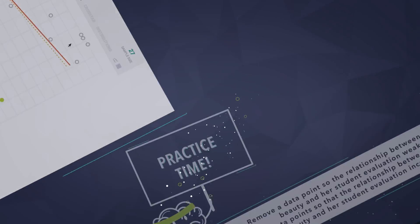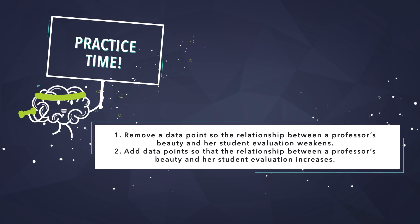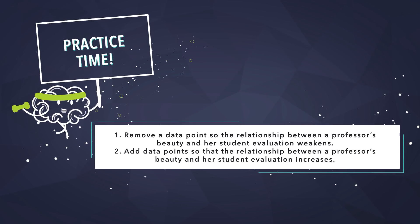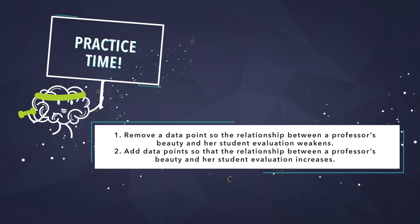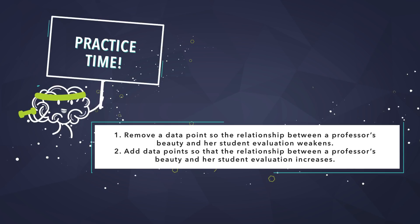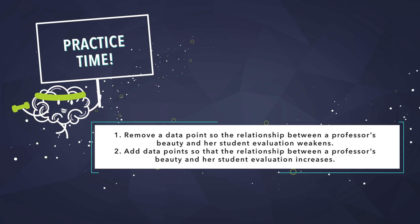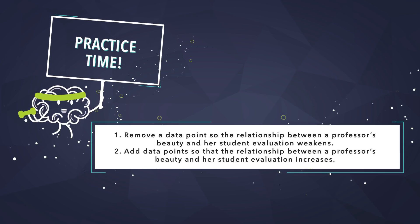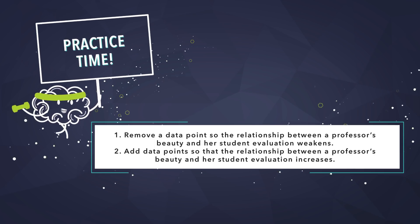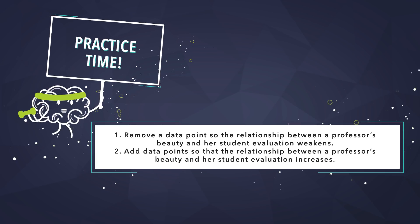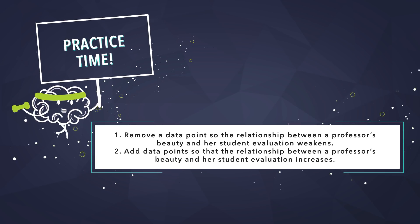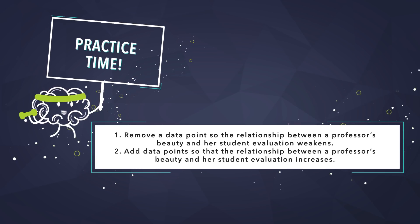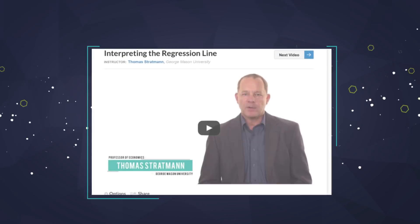Now it's your turn. I'd like you to try two things. First, remove a point so that the relationship weakens — the line should get flatter, so the slope should go down. And second, add some data points to make the relationship stronger. Pause the video now and try it out.